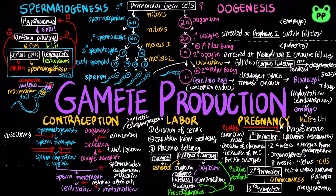Fertilization can also be prevented by abstinence from sexual intercourse, wearing a condom, which is a thin latex rubber that fits over the penis to collect the semen. Coitus interruptus refers to the removal of the penis from the vagina before ejaculation, and it is a very unreliable way to prevent fertilization.